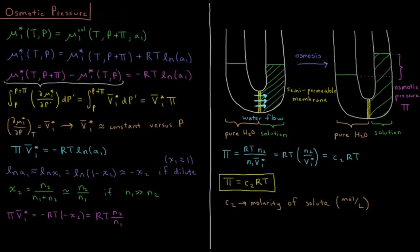If we subtract and rearrange, we get: the chemical potential of pure water at P plus π minus the chemical potential of pure water at atmospheric pressure equals minus RT times ln(A₁). So the difference in chemical potential of pure water at these different pressures must equal minus RT times the natural log of the activity of the water in solution on the right.